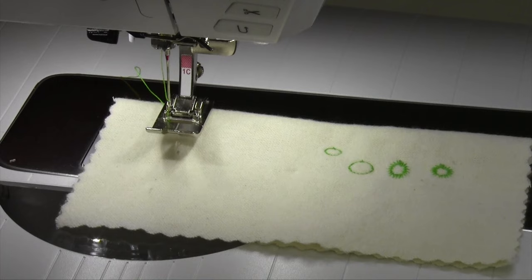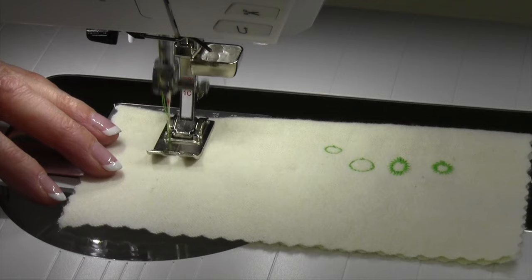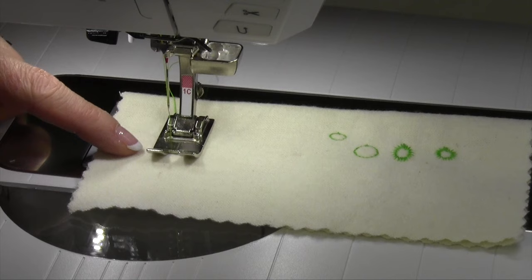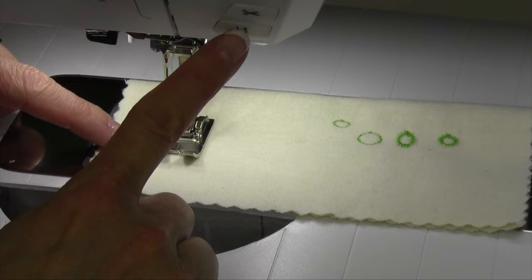As we sew, if we need to actually do this more than once, we can. But we're going to start stitching down and you're going to notice your needle is going to be in the left needle position. As you get past where the rip is, you're going to touch the reverse button one time.